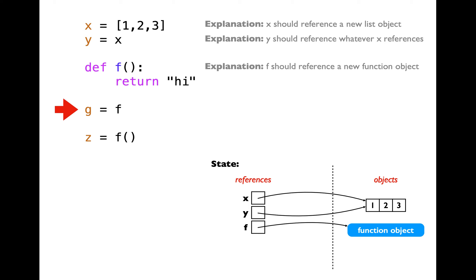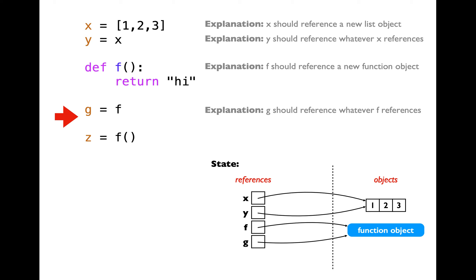If you identified line number four — which says g equal to f — as the totally different and new line, then you got the correct answer. So far, the places where we have been using function names always follow parentheses because we have always been calling the functions. Notice that this line says g equal to f, where f is the name of the function and we do not have parentheses after it. That means we are creating a new variable g and making it reference whatever is referenced by f — which is the function object. So g also references the same function object, kind of like creating an alias, just like you created an alias for the list object.